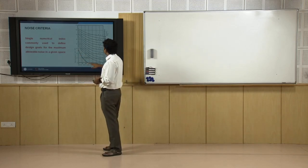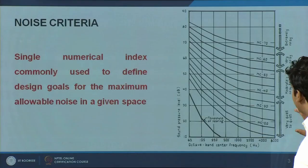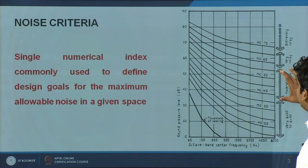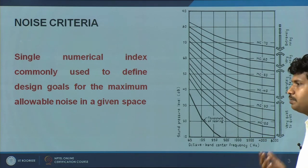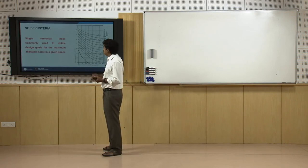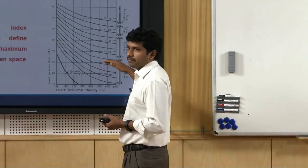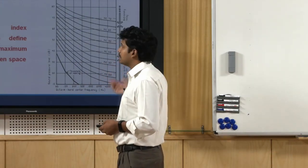There is a lower line which is threshold of hearing. A noise criteria close to 30 or below means a very quiet ambience. Between 30 and around 50 is moderately noisy to noisy. Above 50, close to 60–65, is very noisy, and above 65 is extremely noisy. Depending on the space — a commercial area versus a quiet open office versus a private office or a boardroom — the NC would considerably differ.